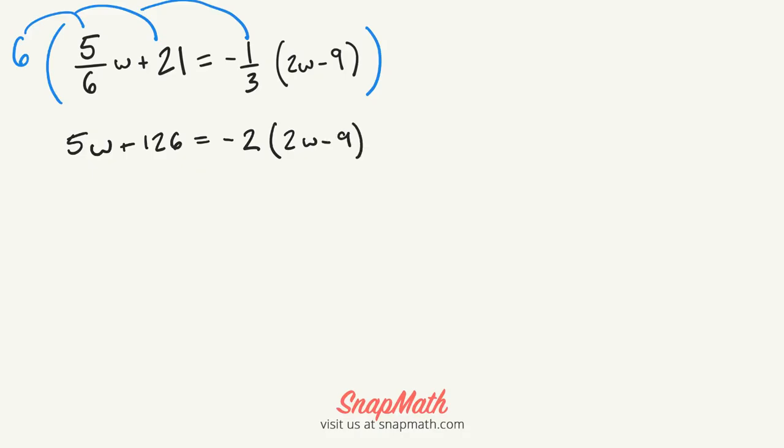The next step is to distribute this negative 2 into the parentheses and rewrite our problem. Nothing happened on the left side, so I'm just going to rewrite 5w plus 126, and then I distribute this. So it's going to be negative 4w plus 18.